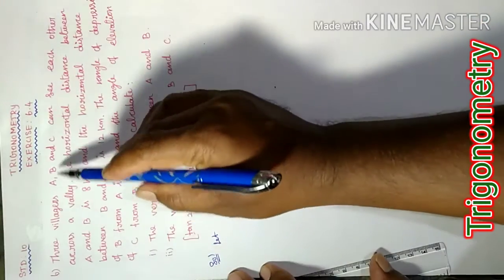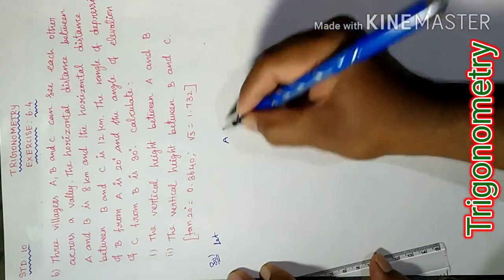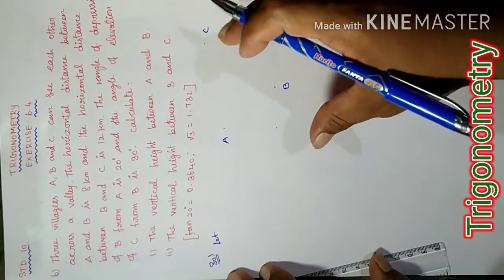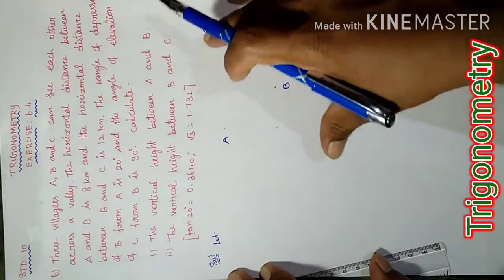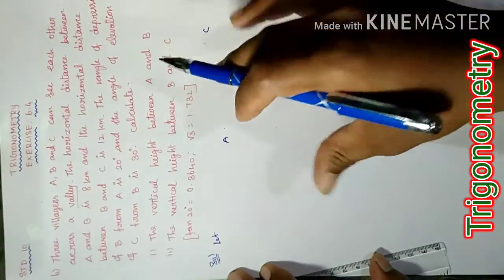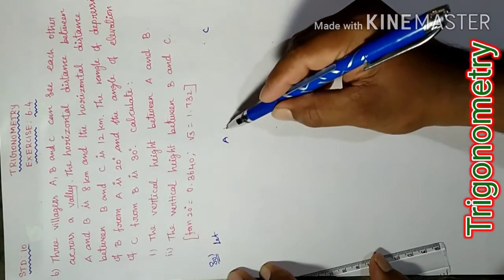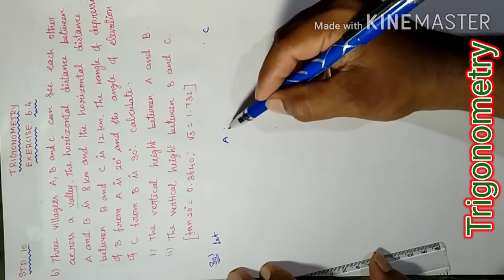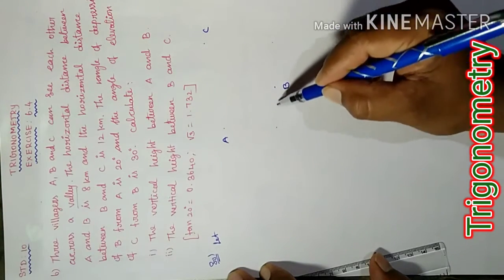Students, A, B, C are 3 villages. Now this is the residential area. They can see each other across the valley. Valley means the valley area.